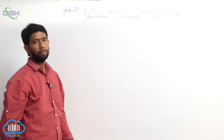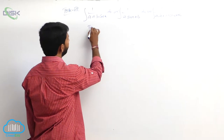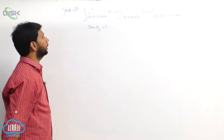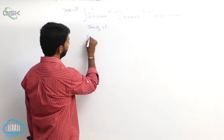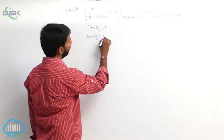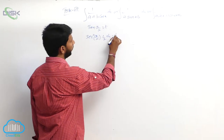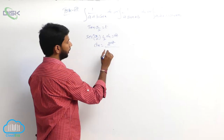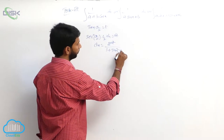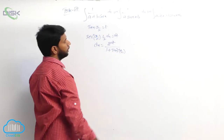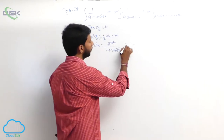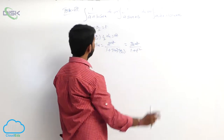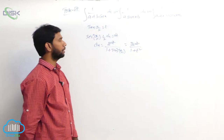This type of problem can be solved by taking tan(x/2) equal to t. Differentiating both sides, secant square(x/2) into 1/2 into dx equals dt. That is, dx equals 2 dt by secant square(x/2), which can be written as 2 dt by (1 plus tan square(x/2)), so dx equals 2 dt by (1 plus t square).